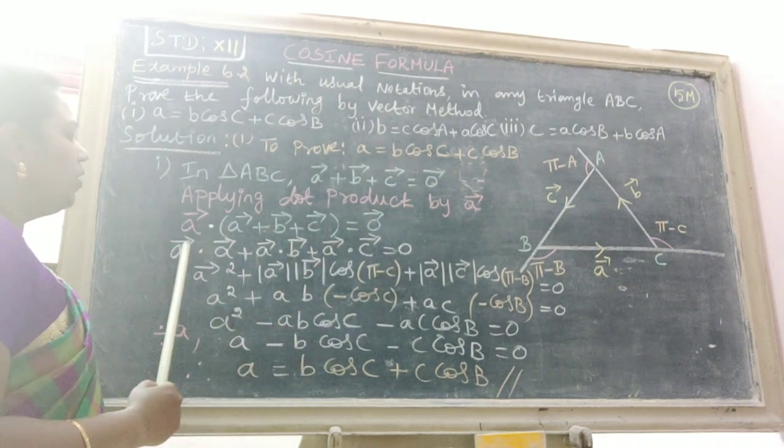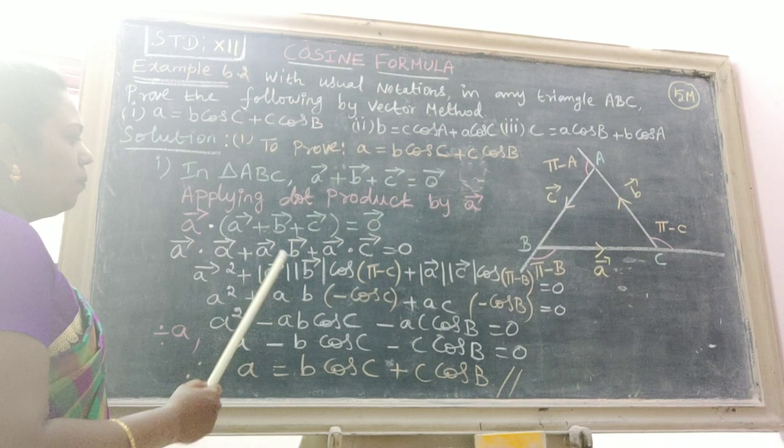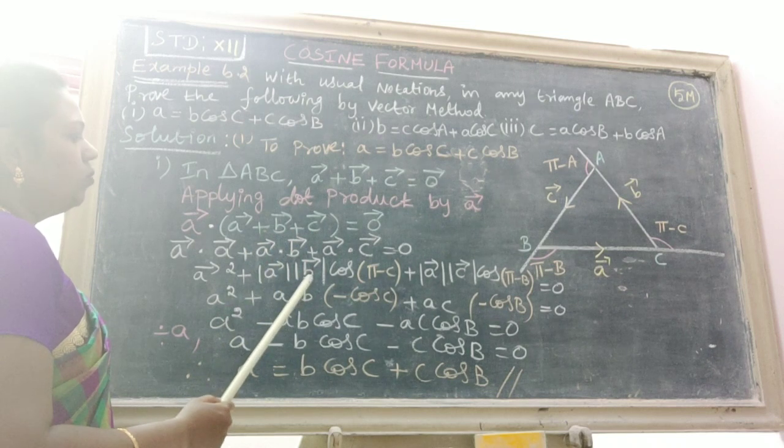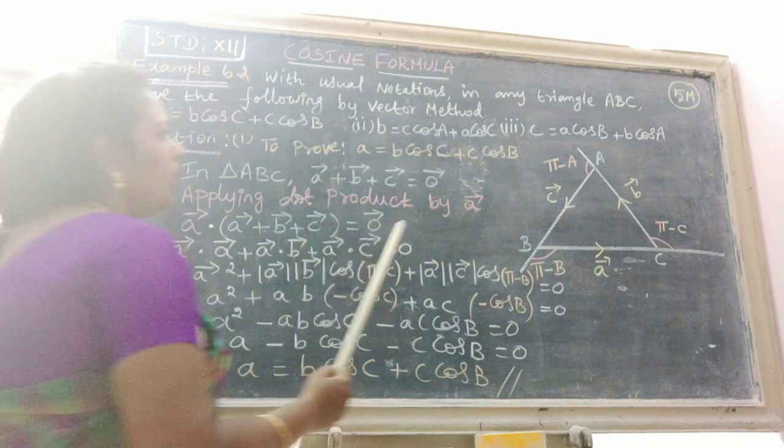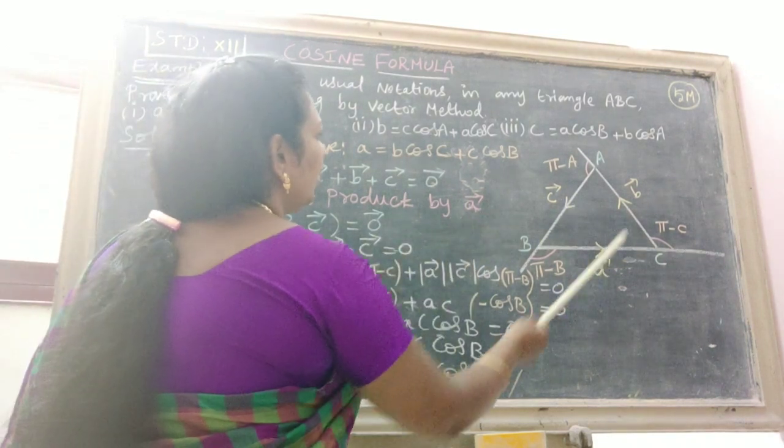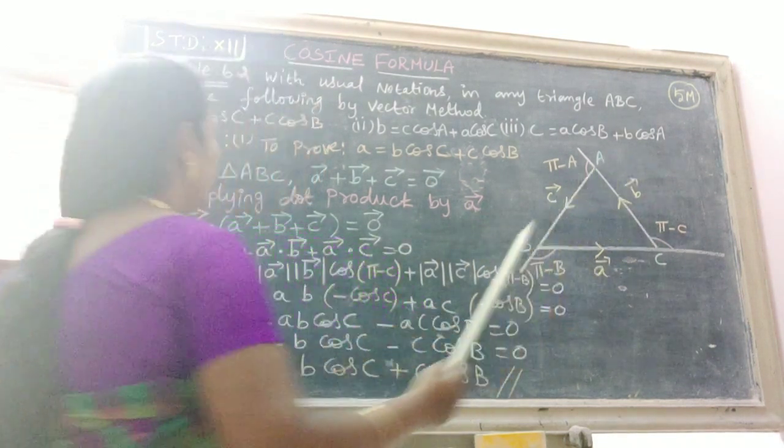By the definition of dot product, we apply modulus A times modulus B times cos(angle between A and B). The angle between A vector and B vector is π minus C. Therefore substitute cos(π - C).